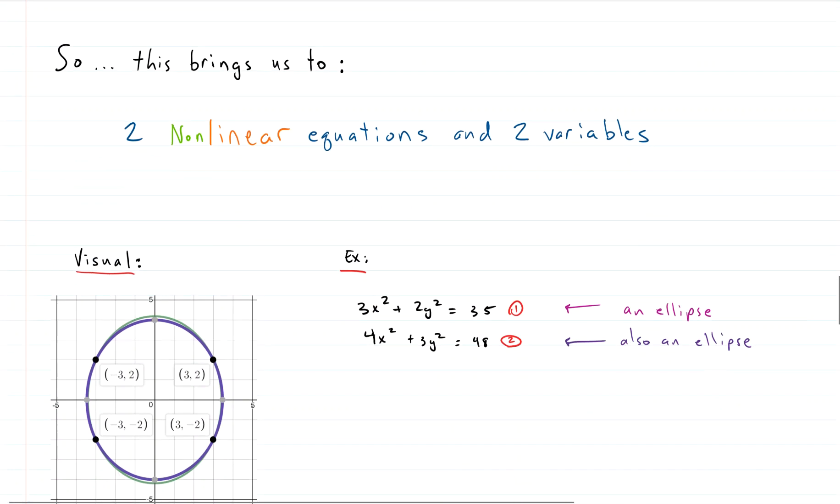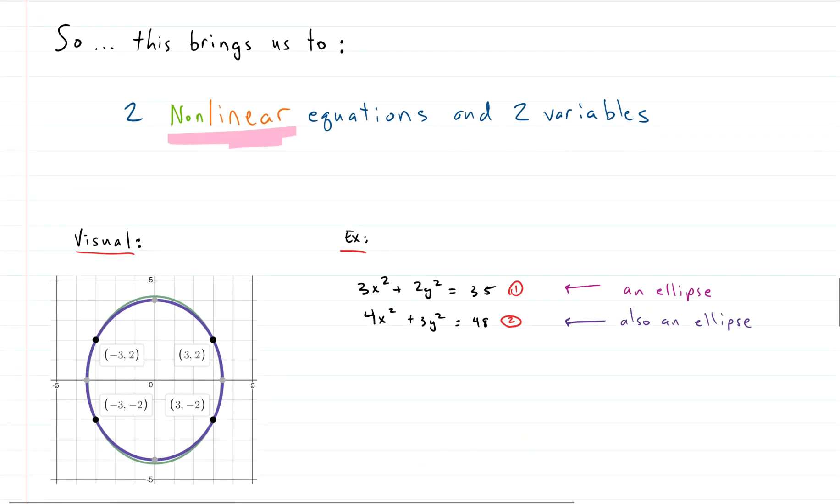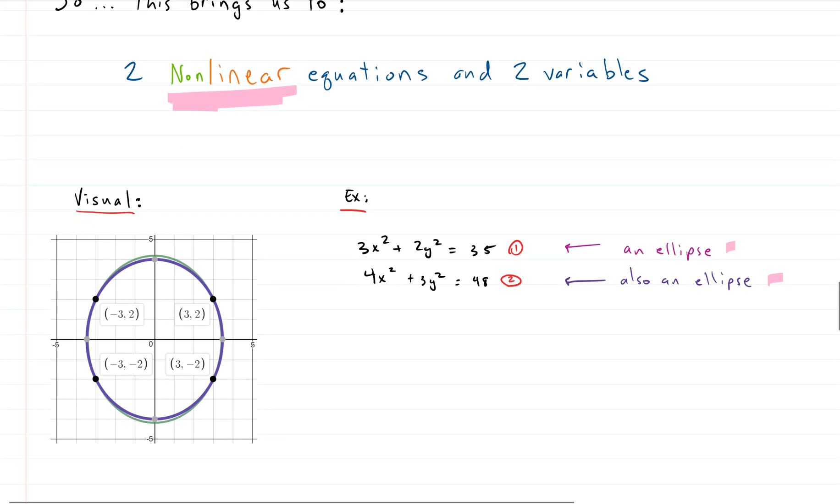That brings us to nonlinear equations. So again, nonlinear means we can now have exponents that are not just one. And both of these are ellipses. The top one's an ellipse. The bottom one's an ellipse. Two equations, two unknowns. Here we go. If we want to look at a visual, we can see where they touch, right? We know where they touch. Here's a touching point here. Top left and bottom left. It's got four of them. Four places. So as we're looking for our solutions, we're going to have four solutions, and we need to make sure we find all of them.